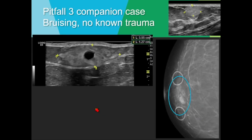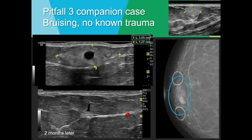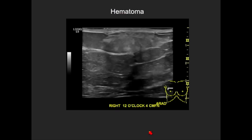Another companion case: a patient who presented for screening mammogram with a bruise marked by the technologist with mole markers. A vague new asymmetry was noted on the mammogram. At ultrasound, there was an anechoic area centrally with a somewhat ill-defined hyperechoic area in the region of bruising. Two months later, this had almost completely resolved — the collapsed cystic area confirmed we were looking at the right place. This was consistent with a hematoma.